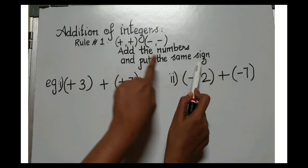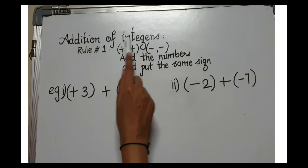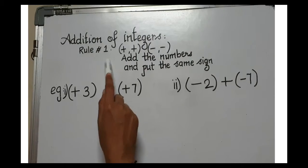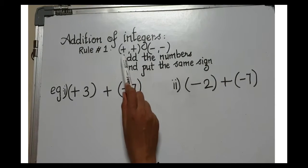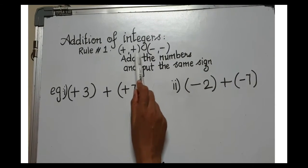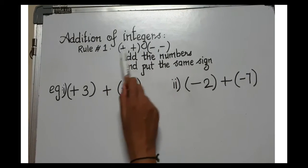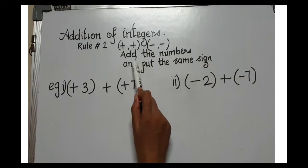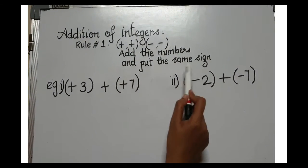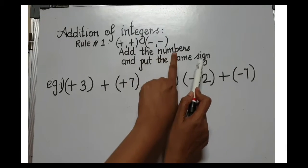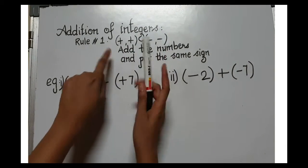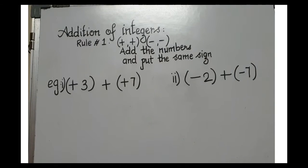Let's see how to use this rule. Rule number one applies when both are positive-positive or negative-negative. So whenever you have plus-plus or minus-minus, add the numbers and put the same sign.